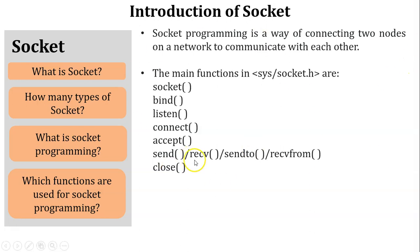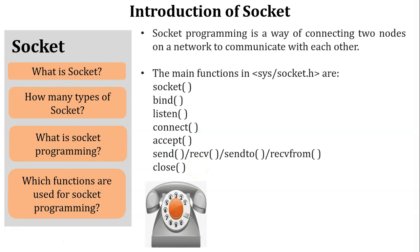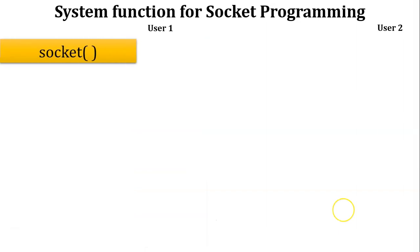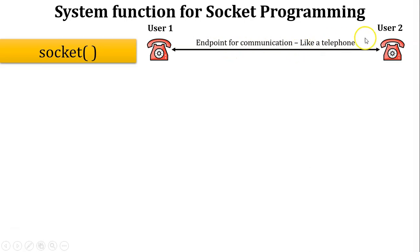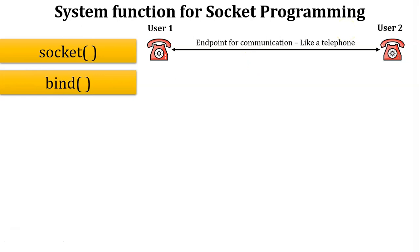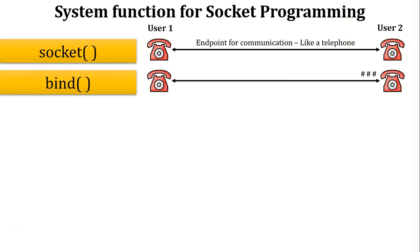Let's understand all the system functions using a telephone analogy. Client equals user 1 and server equals user 2, since socket programming is used in client-server architecture. The socket function creates an endpoint for communication — like a telephone installed at both user 1 and user 2's sites. The bind function assigns a unique socket address, just like assigning a unique number to each telephone.